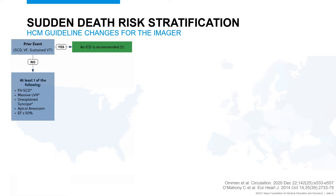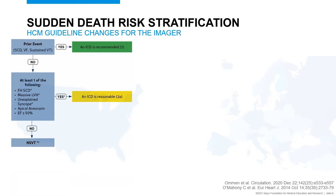Massive left ventricular hypertrophy is defined as a wall thickness greater than 30 millimeters. Unexplained syncope is concerning — this is really arrhythmogenic syncope, requiring careful history taking; vasovagal syncope at a blood draw would not qualify. Apical aneurysm or presence of a left ventricular ejection fraction less than 50% are also criteria. If any of those are present, an ICD is reasonable. If none are present, we look at non-sustained ventricular tachycardia on ambulatory monitoring or exercise treadmill testing — if present in children, an ICD is reasonable; in adults, it may be considered (class 2B).